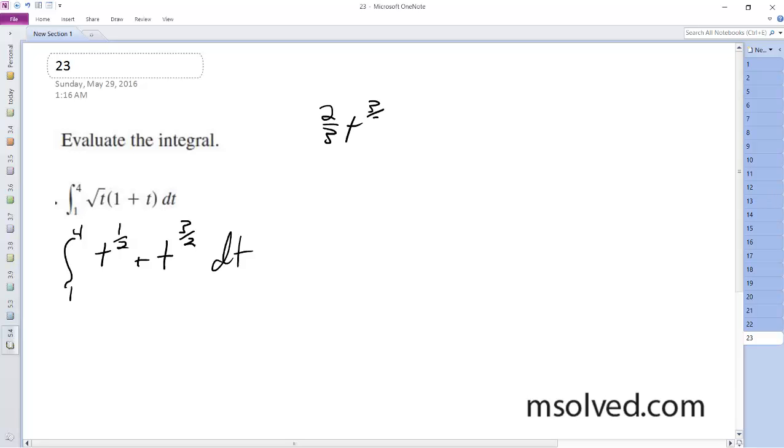2 thirds t to the 3 halves, plus 2 fifths t to the 5 halves